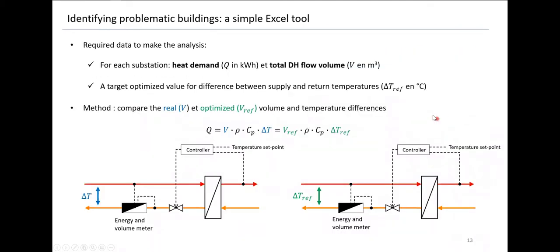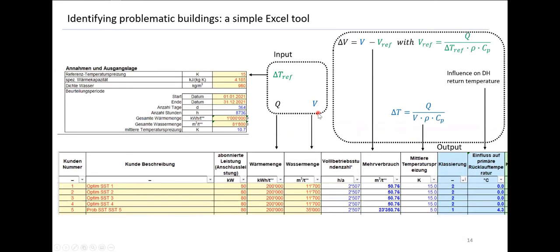To make the analysis, we need for each substation the consumed heat of the building — annual readings, for example — and the total volume that passes through the substation. You must also set a target value for your delta T, which we call delta T ref. The method is to compare the actual volume consumed by the substation with an optimized volume — the volume the substation would have consumed if it had reached the target delta T.